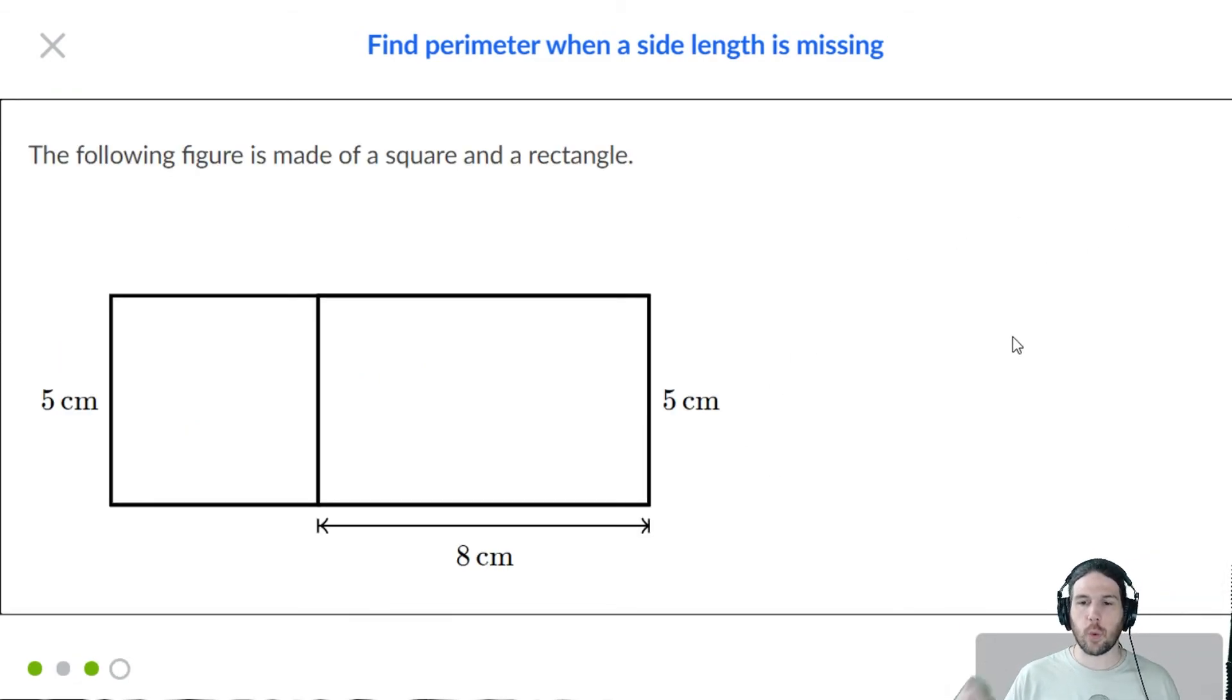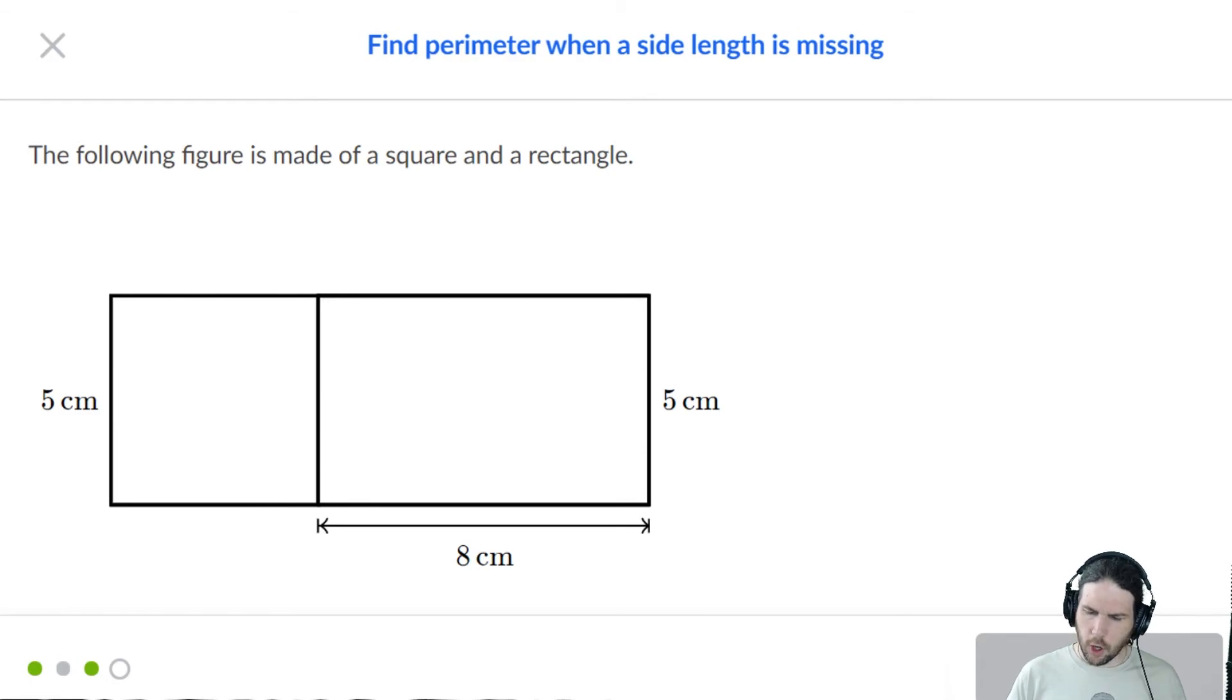The following figure is made of a square and a rectangle. So again, we are expected to label each of these sides. And it's always a good idea to actually label the sides. Because this is a rectangle, we know this is eight centimeters from here to here. And by the way, notice how I'm narrating why I know that that is eight centimeters, despite the fact that I have said that rectangles have the same sides opposite each other over and over and over again on this stream.